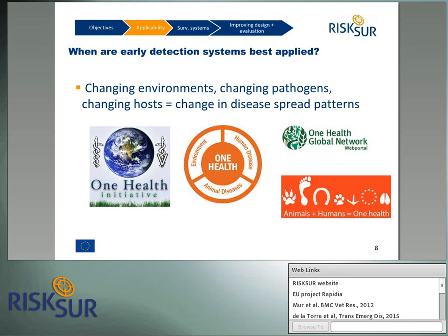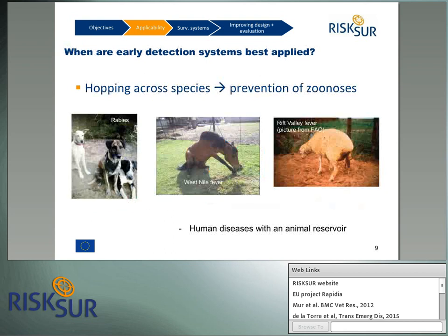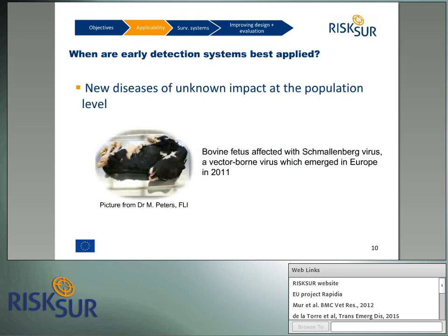Ultimately, early detection systems are aimed to detect change — whether this change happens in the environment, in the pathogens, or in the hosts. We want to detect change in the disease spread patterns, following the One Health philosophy that has become so popular in recent years. That is why early detection systems are also applied to zoonotic diseases, because they constitute an early detection for humans, even if the characteristics in the animal reservoir may not be the best suited for early detection. Early detection systems are also well applied for new diseases of unknown impact at the population level, because it is the only way to detect new diseases.